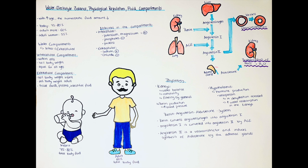The kidneys can also regulate water balance by producing hormones. An example is the hormone renin, which by a cascade acts to elevate arterial blood pressure — for example, in response to low blood volume caused by dehydration. This is known as the renin-angiotensin-aldosterone system. Renin is produced by the kidneys and converts angiotensinogen — a precursor protein produced by the liver — into angiotensin-1. Then angiotensin-1 is converted into angiotensin-2 by an enzyme called ACE, which stands for angiotensin-converting enzyme, produced by the lungs.